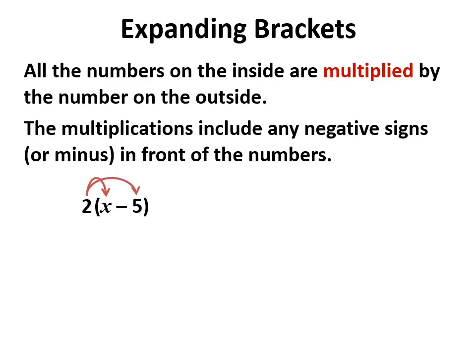We take the 2, multiply it by x and by the 5—that's a minus 5—so we get 2x and minus 10. You can write it as 2x - 10 if you prefer.